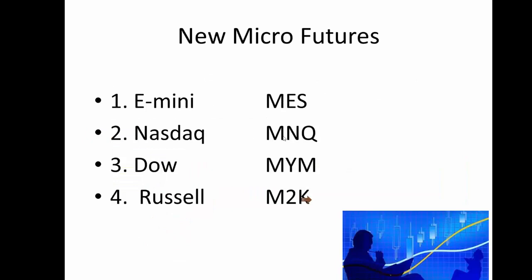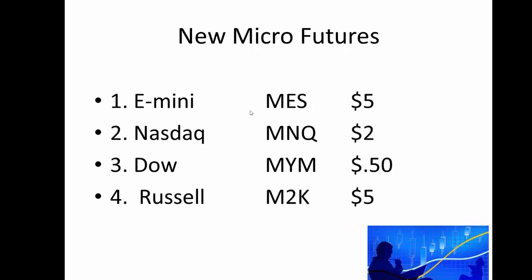A little bit about the micro futures — I personally think this is a very important development. The symbols are on the screen: for the e-mini it's the MES, NASDAQ is MNQ, Dow is MYM, Russell is M2K. The movement per point on the micro e-mini is $5, which is one-tenth of the corresponding contract. The e-mini movement per point is $50; on the MES it's $5, and so on.